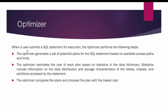When a user submits a SQL statement for execution, the optimizer performs the following steps. First, the optimizer generates a set of potential plans for the SQL statement based on all available access paths and hints, and then it decides the cost of each plan. To calculate the cost of each plan, the optimizer relies on statistics stored in the data dictionary tables.